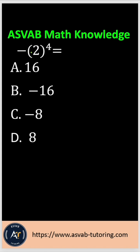Another thing: you have a parenthesis, so you have to use PEMDAS. That means you have to work inside the parenthesis first and then keep the negative sign outside. In order to do that, 2 to the 4th power means you have to multiply 2 by itself 4 times.